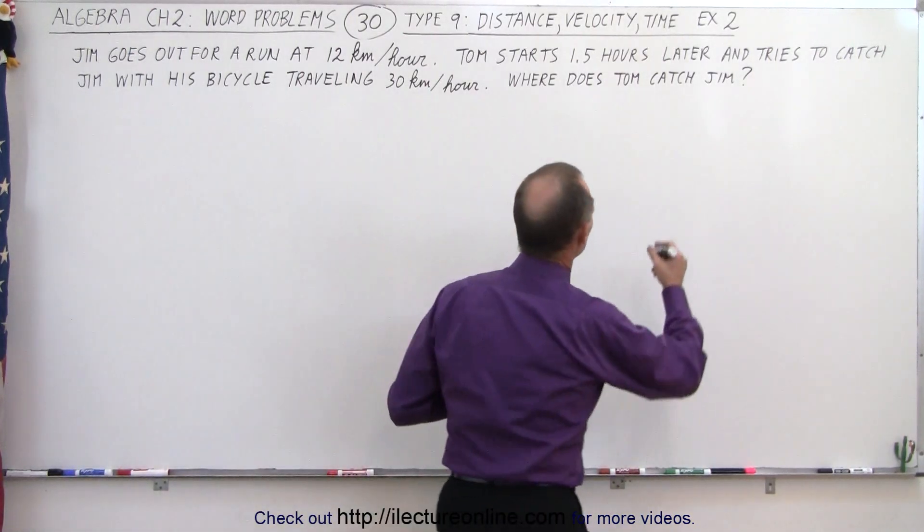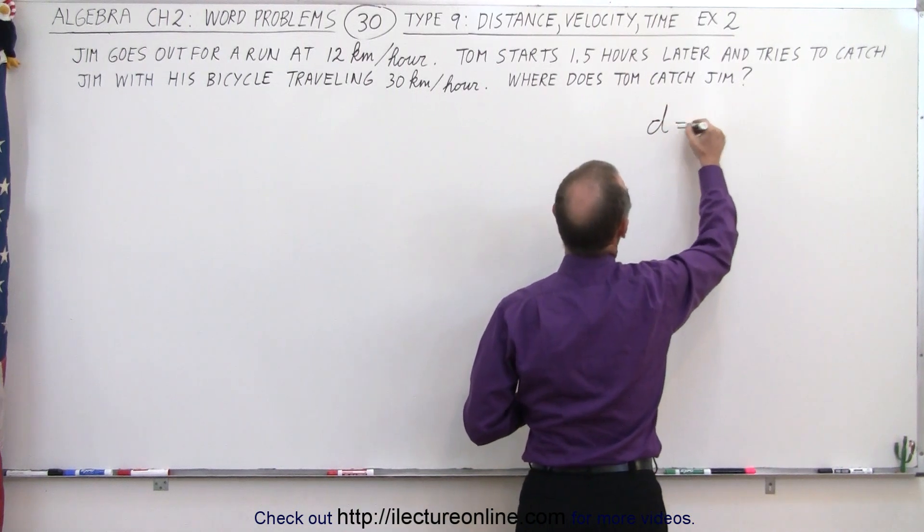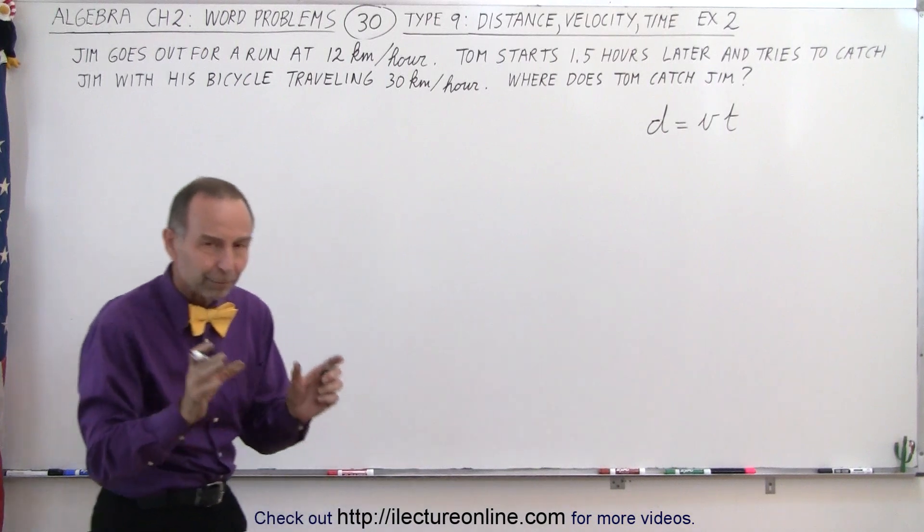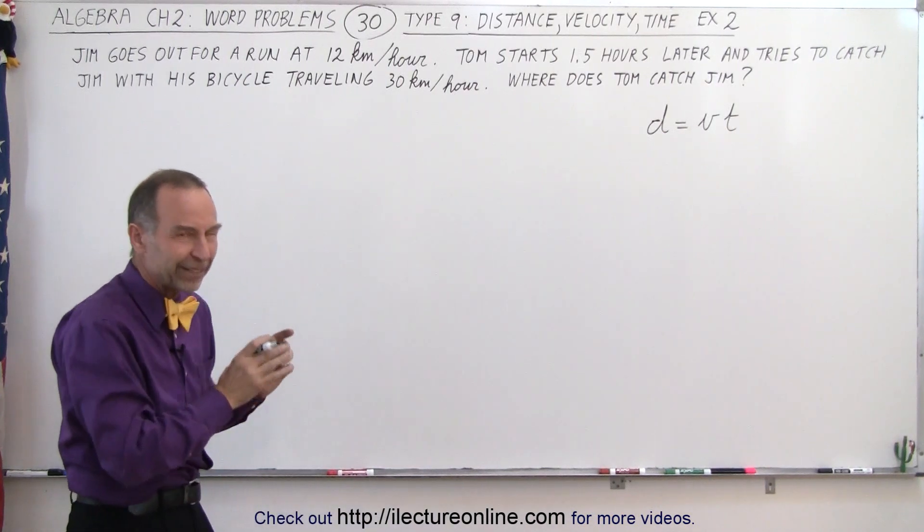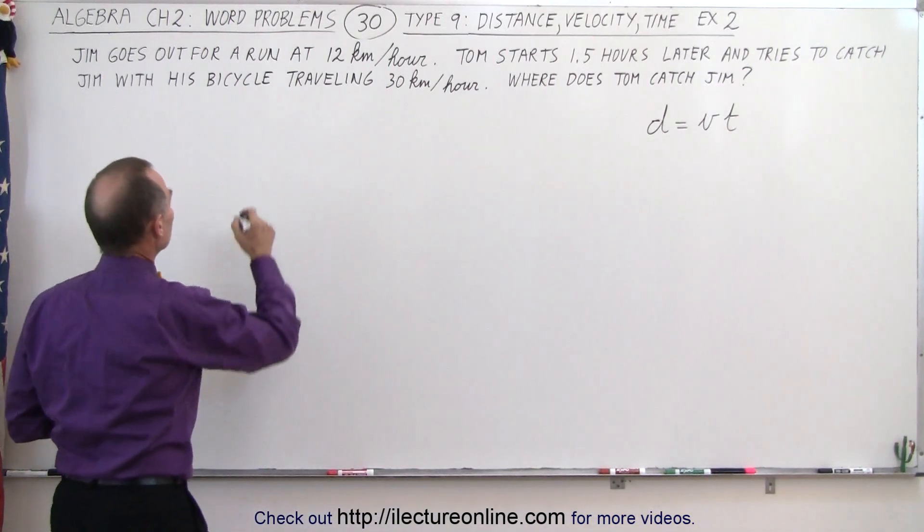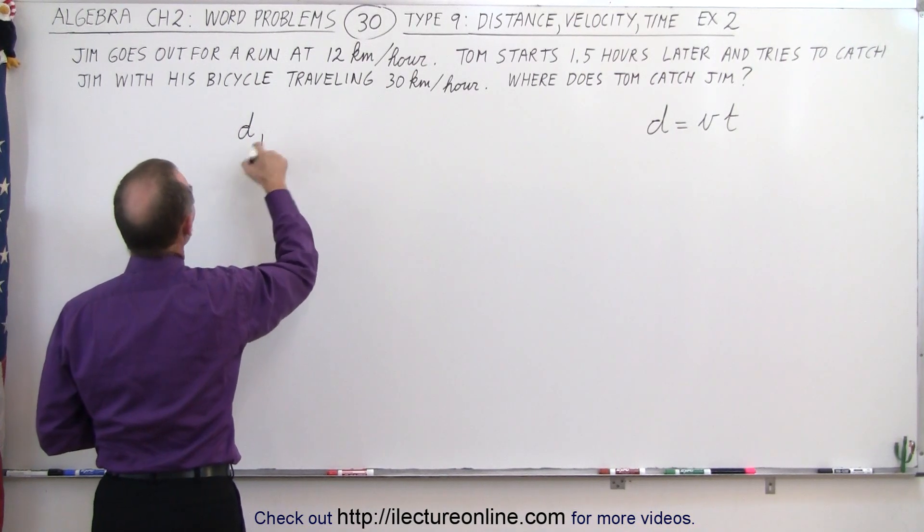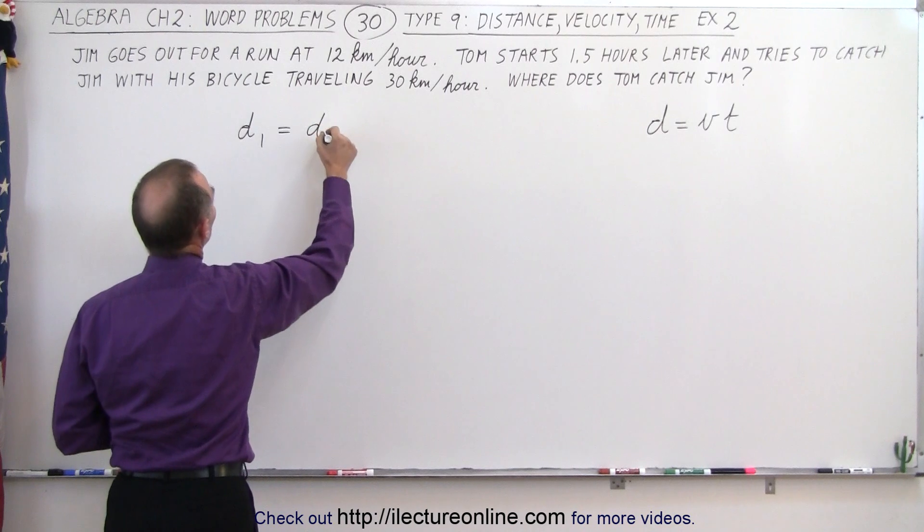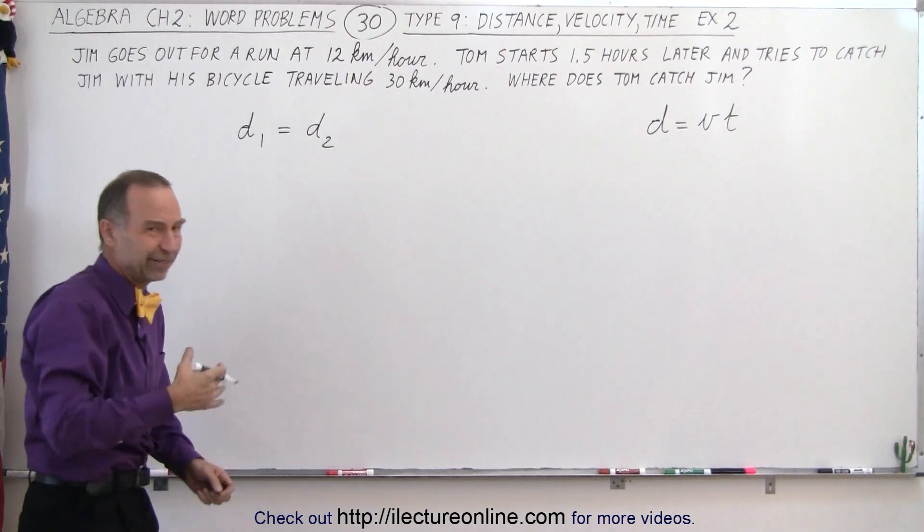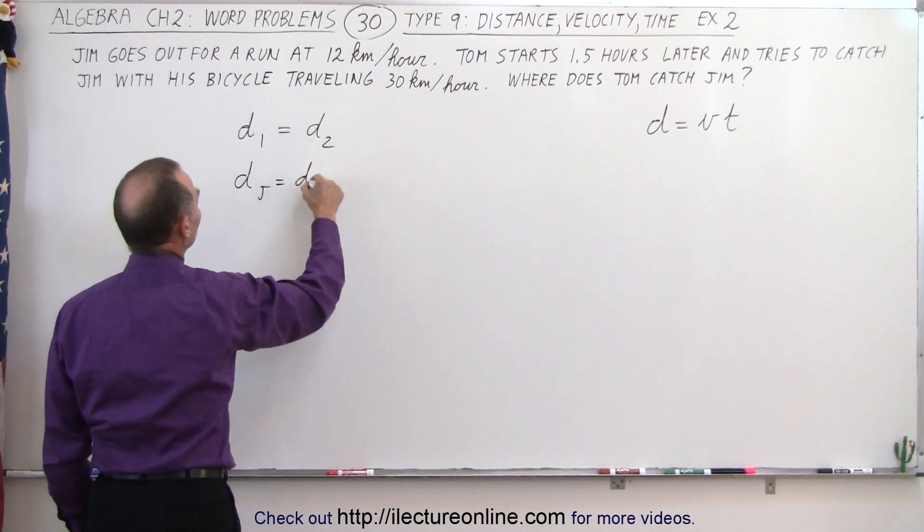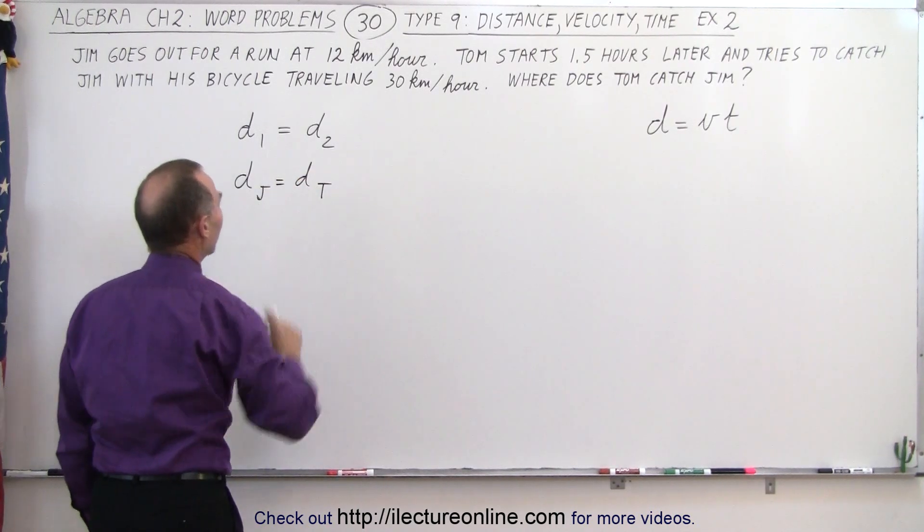We start with the equation distance equals velocity times time. And in this case, we have to realize that both Tom and Jim travel the exact same distance. So the strategy we're going to use is that distance traveled by Jim must equal the distance traveled by Tom. We can write d1 equals d2 or dj equals dt if that makes it easier to follow.